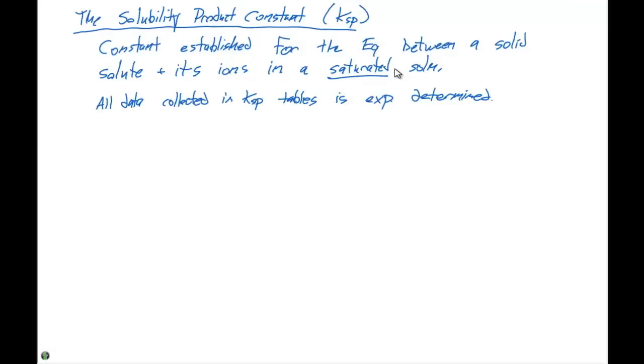So, what we did is we're going to experimentally determine the KSP for the following expression. In our case, we have calcium iodate, which is Ca(IO3)2 as a solid, in equilibrium with calcium two plus in aqueous solution plus two IO3 minus, also in aqueous solution. From this, we can write a KSP expression.